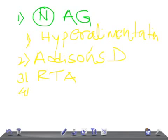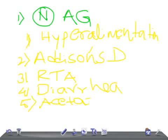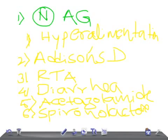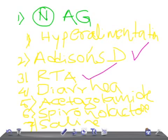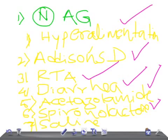Then renal tubular acidosis (RTA), and diarrhea. You can try to make a mnemonic from the first letters of each word. Then we have acetazolamide, spironolactone, and saline infusion. The key important causes to remember are Addison's disease, RTA, diarrhea — diarrhea is really very important — spironolactone, and hyperalimentation.